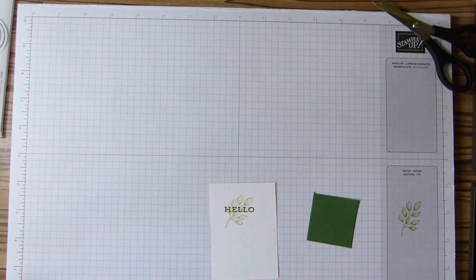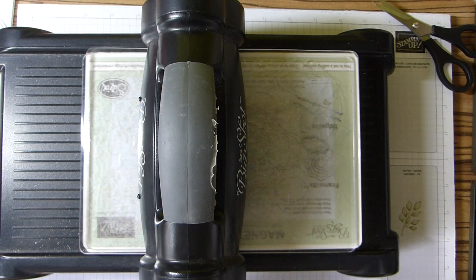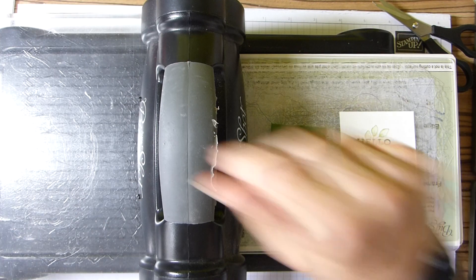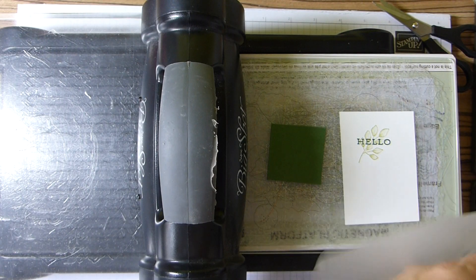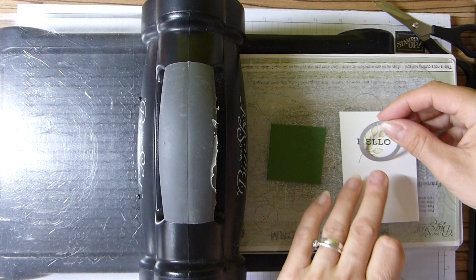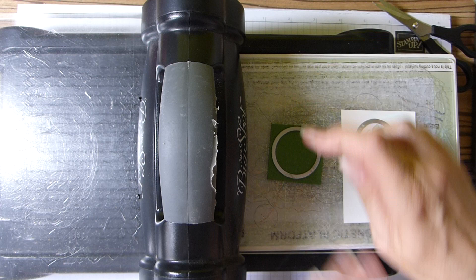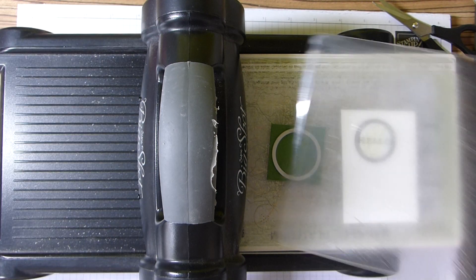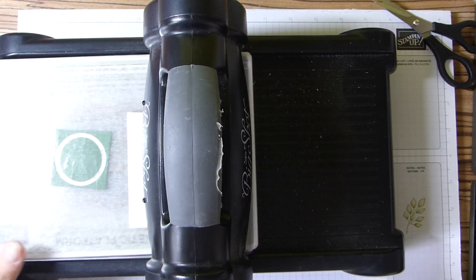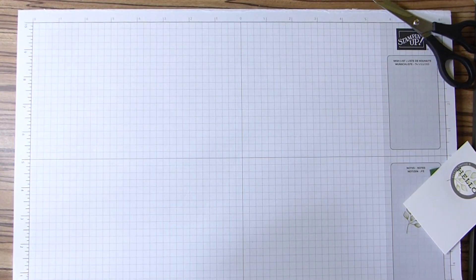And then I just need to bring in my die cutting machine and my layering circles. Obviously if you have punches, that's ideal. I'm just going to grab my layering circles, and you just need the two smallest ones here. So your smallest one just fits hello, and your second one will just fit on that square of card that you cut out earlier, so we don't waste. And then just grab those, swing this back out of the way.